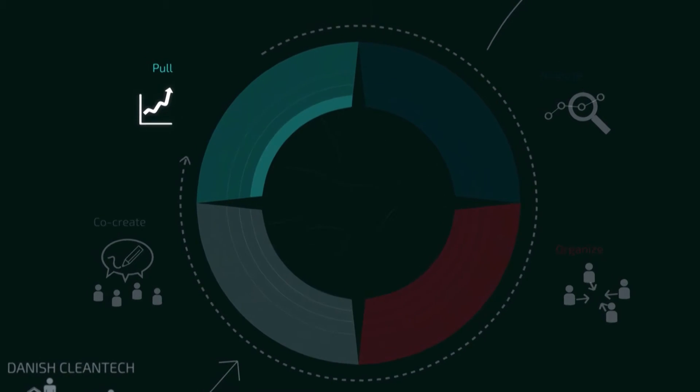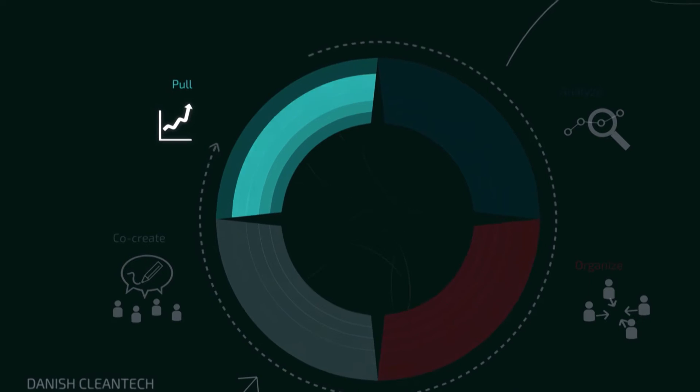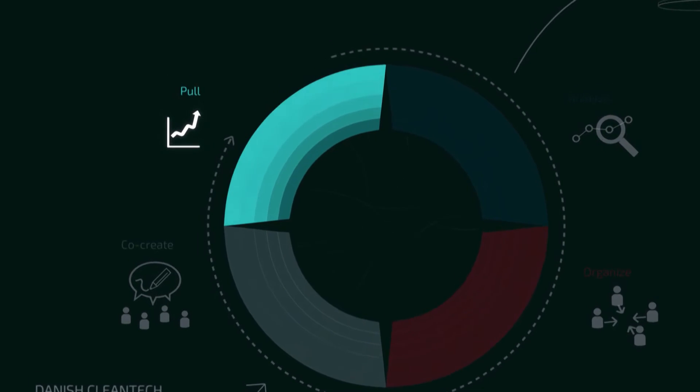The first element of the model is pull — locating the need for Danish cleantech on the global market. It's important to use a pull attitude where you go out and experience what solution is needed around the world, because they don't just need a product, they need a solution, a full-scale solution.